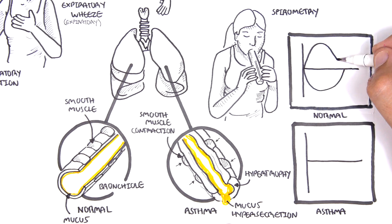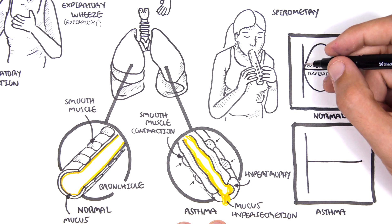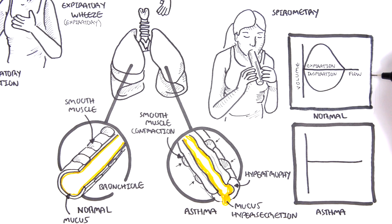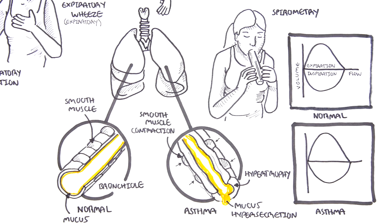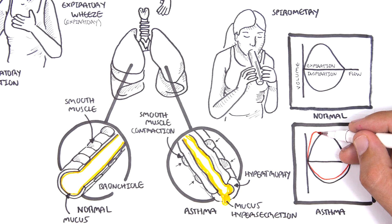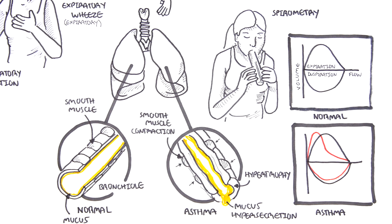A normal inspiration and expiration measurement will have sufficient volume and flow on the graph. In asthma, there is decreased inspiratory volume and expiration shows an obstructive pattern. A FEV1 over FVC ratio of 80% of predicted or less is diagnostic for asthma.